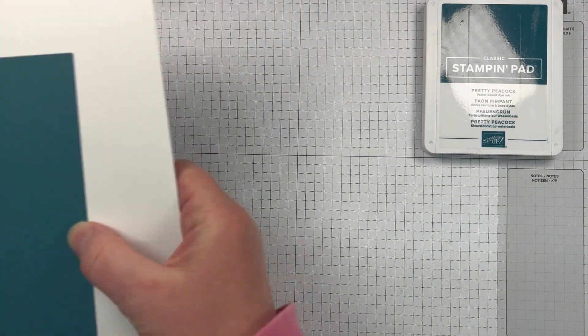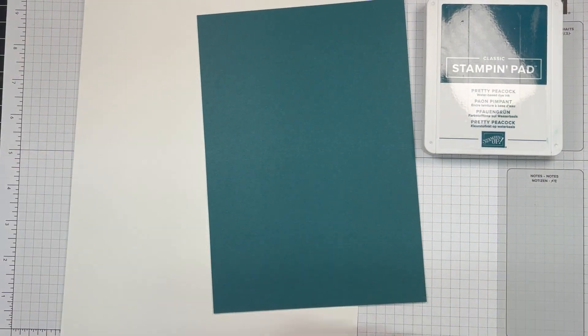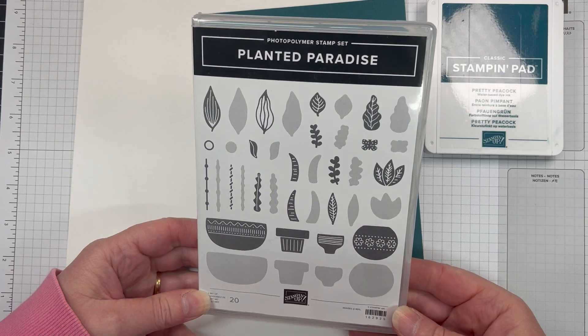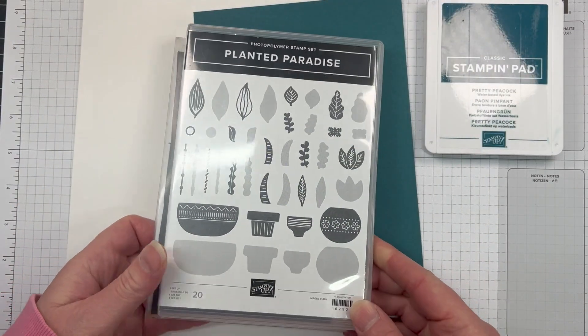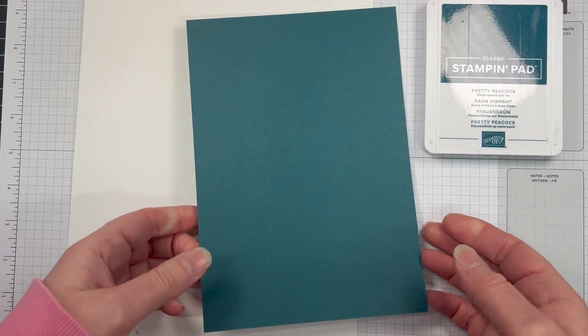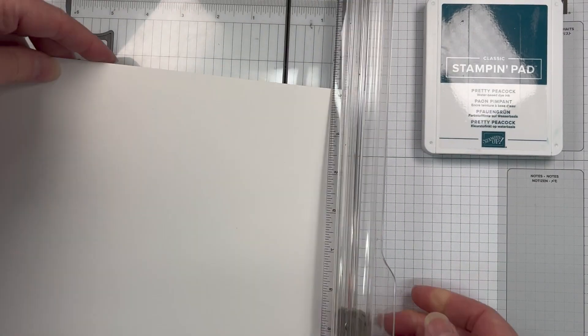This week we're featuring Pretty Peacock, which is the most beautiful green you've ever seen. I'm using the Planted Paradise stamp set as well as the Stylish Shaped Dies. Stylish Shaped Dies are my absolute favorite and I tend to use them quite regularly on my cards.